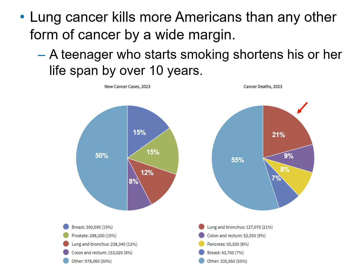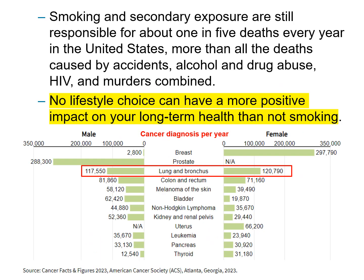Lung cancer kills more Americans than any other form of cancer by a wide margin — 21%, according to the NIH. A teen who starts smoking shortens his or her lifespan by over 10 years. Smoking and secondary exposure are still responsible for about one in five deaths every year in the U.S. — more than all deaths caused by accidents, alcohol and drug abuse, HIV, and murders combined. No lifestyle choice can have a more positive impact on your long-term health than not smoking.